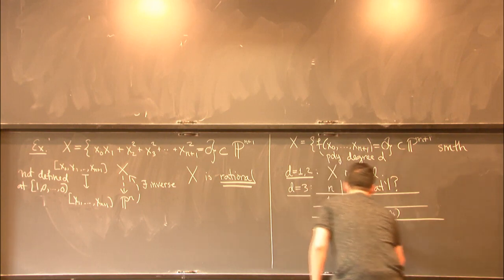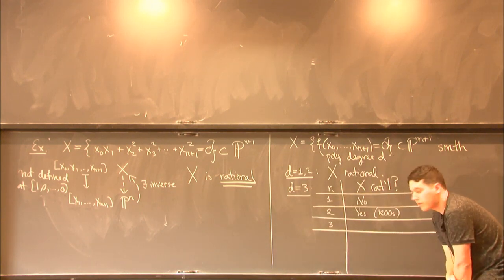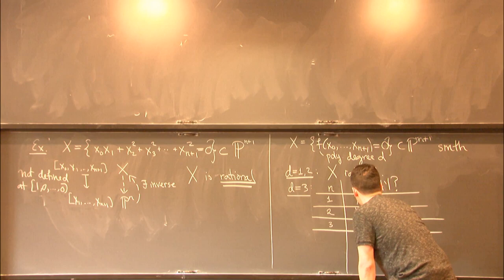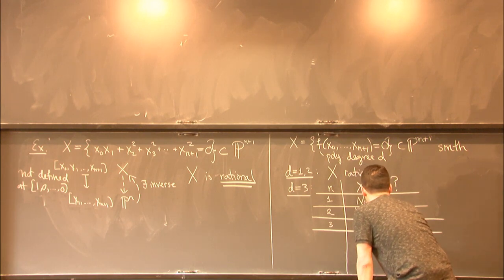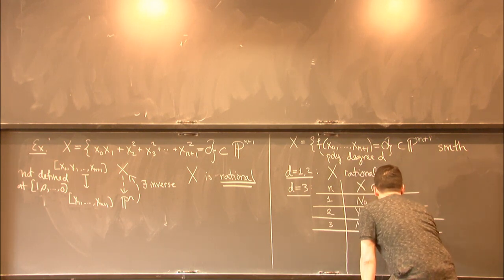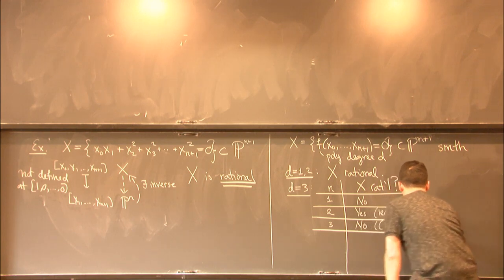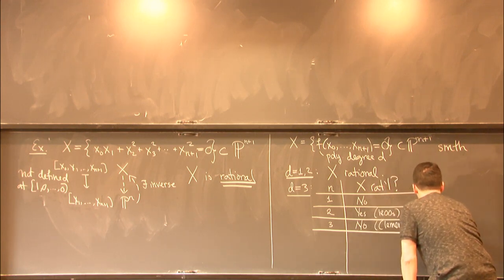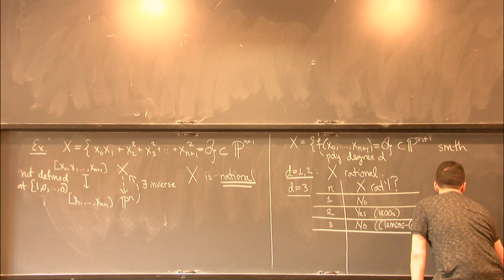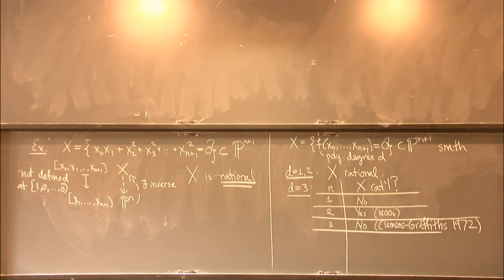When n is equal to 3, this is maybe, you could call it modern, I guess. The answer is no. So this was proved by Clemens and Griffiths. I think it was 1972, their paper. So this was a kind of big result when it happened. And it was really a hard thing. It involved a lot of new ideas. So that's when n is 3.